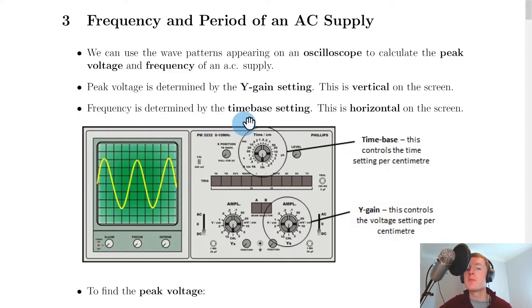However, frequency is determined by the time base setting on the screen, which is horizontal. So we're actually going to be dealing with the x-axis or the horizontal divisions on the screen when trying to find the period or the frequency.